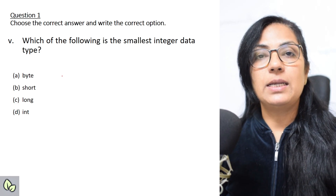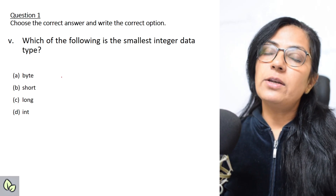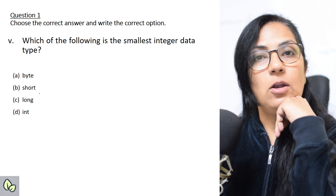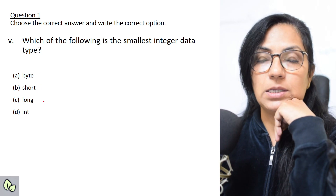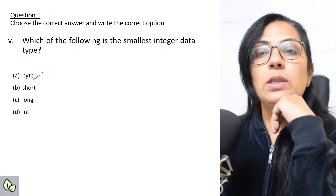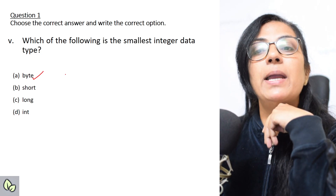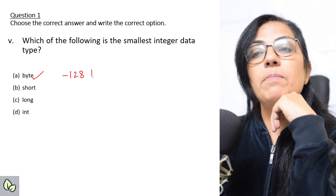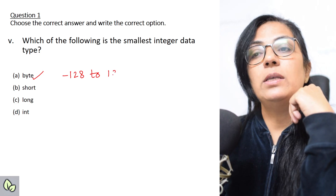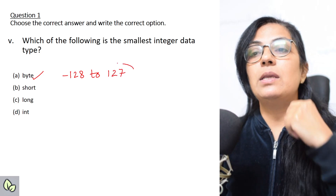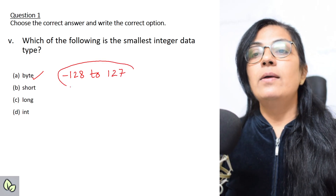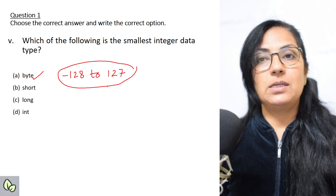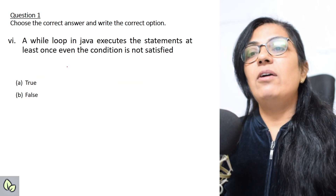Which of the following is the smallest integer data type? For integers we have four primitive data types: byte, short, int, and long. The smallest is byte. The range for storing values in byte is from -128 to 127.